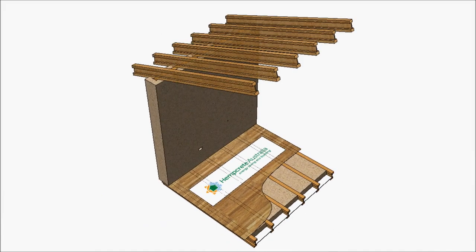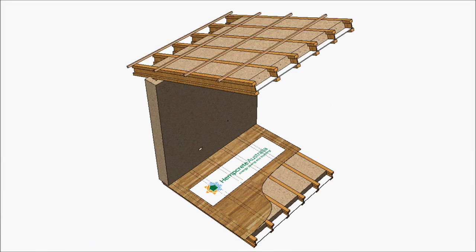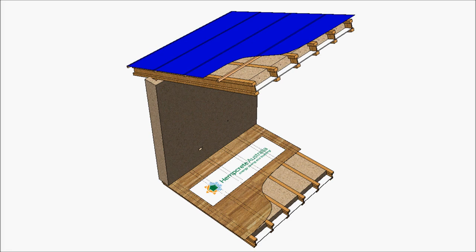Like the floor, the lightweight ceiling insulation will be installed. Here we show magnesium board as a formwork. Roof cladding is installed as usual.